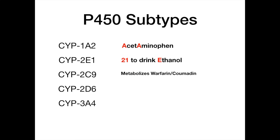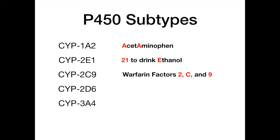CYP2C9 metabolizes warfarin, aka coumadin — the prototypical blood thinner used in the hospital. This is a two-part mnemonic that requires knowing which factors warfarin acts on. Warfarin acts on factors 2, 7, 9, 10, protein C, and protein S. Going every other factor in ascending order gives you 2, 9, C. Rearranging that gives you 2, C, 9 — which is exactly the subtype CYP2C9. So CYP2C9 reflects warfarin's factors 2, C, and 9, meaning it metabolizes warfarin.